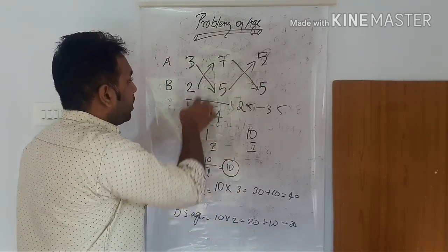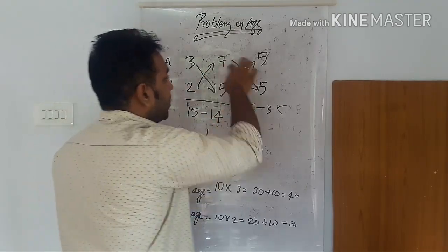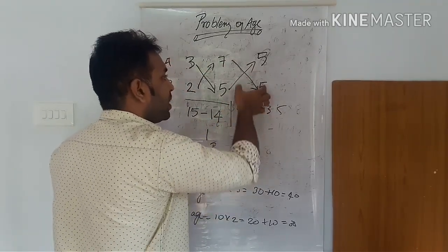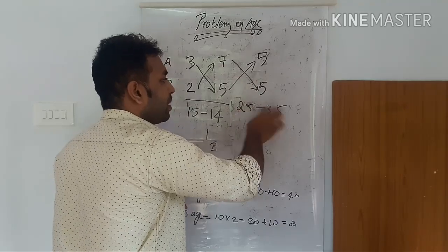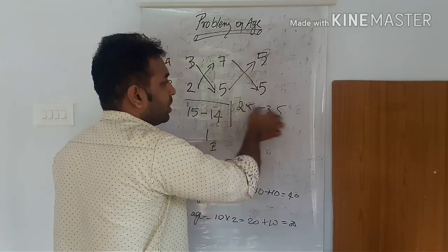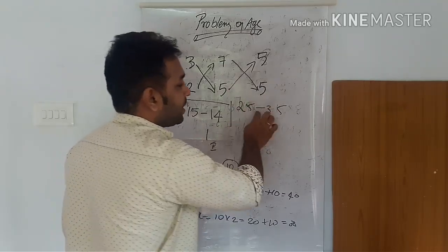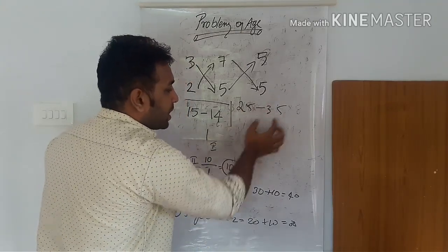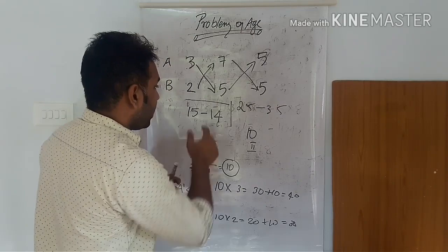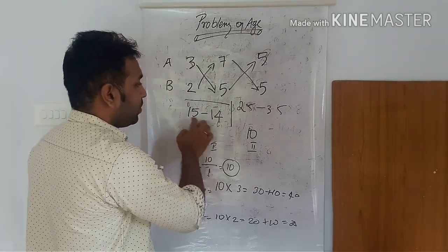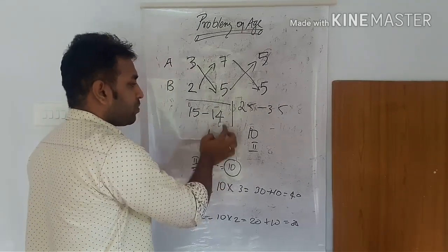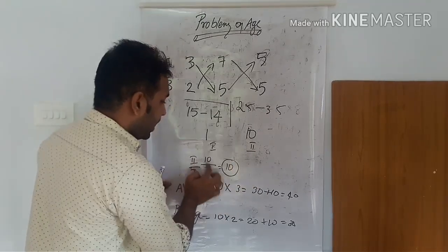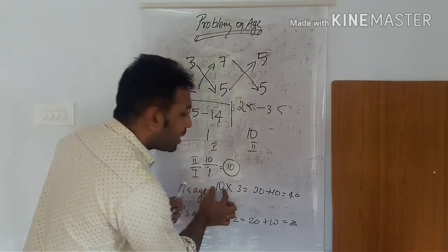To recap: 3 times 5 is 15, 2 times 7 is 14, 7 times 5 is 35, 5 times 5 is 25. So 25 minus 35 equals minus 10, which is 10. And 15 minus 14 equals 1. Then 10 divided by 1 equals 10. So 10 is the answer.